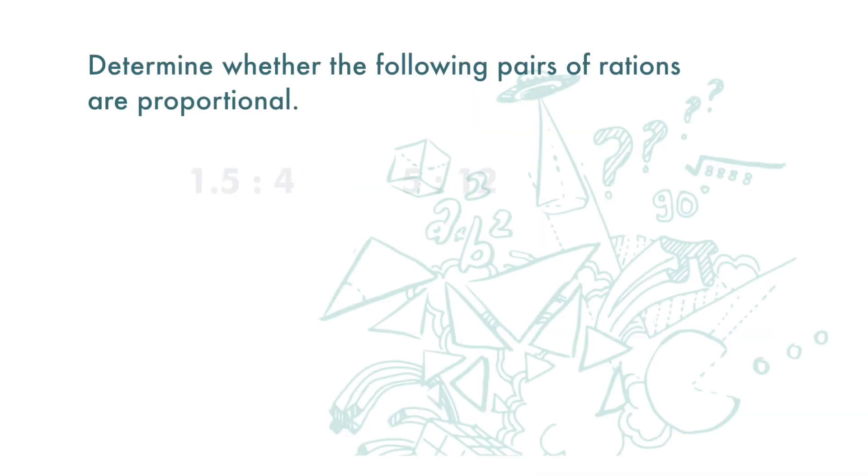Determine whether the following pairs of ratios are proportional. To compare the two ratios, let's make the first part of both the ratios the same. We need to find the common multiple for 1.5 and 5, and that can be 15. If we multiply the first ratio by 10, we get 15 to 40.